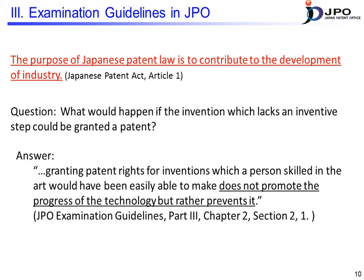If a patent right is granted to an invention that has no inventive step, granting an exclusive right to an invention that a person skilled in the art would have been easily able to conceive does not promote the progress of technology in society, but prevents it instead. The requirement of inventive step aims to eliminate these inventions as subject to patent rights. Another positive ground for the requirement of inventive step is the encouragement of advanced inventions — promoting the development of industry by stipulating rapid progress in technology. Therefore, the requirement of inventive step gives inventors an incentive to make advanced inventions so that they can overcome the hurdle of inventive step.